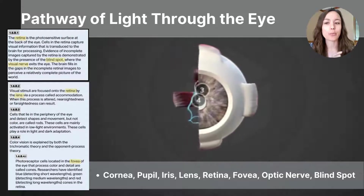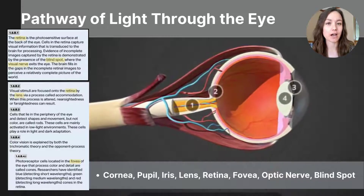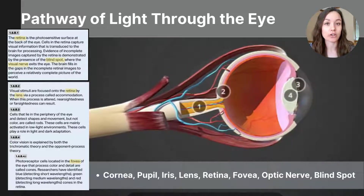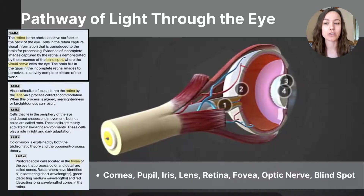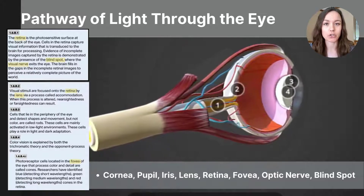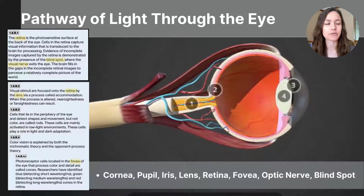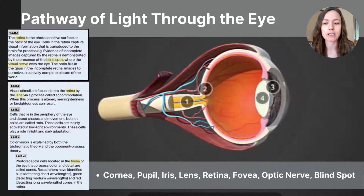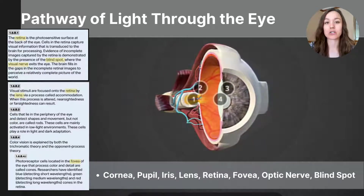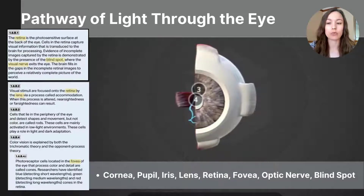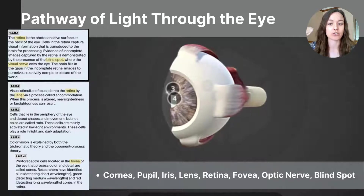Let's work through the passage of light through the eye. I'm using a 3D model cut through the center that allows you to see the structures inside the eye, and I will follow the pathway of structures listed at the bottom of the screen. I've included a few additional terms in a slightly different order than the CED. I'm going to start with light in the environment and then work through how it passes through the eye, defining each of the structures along the way.